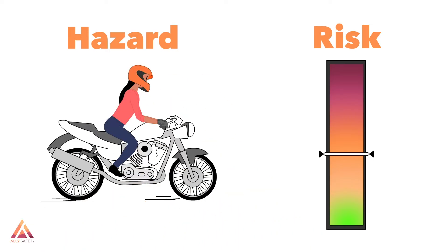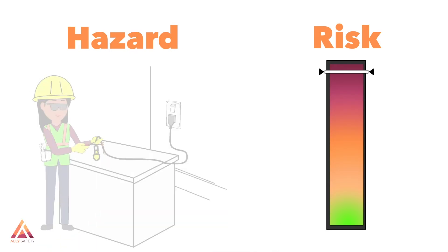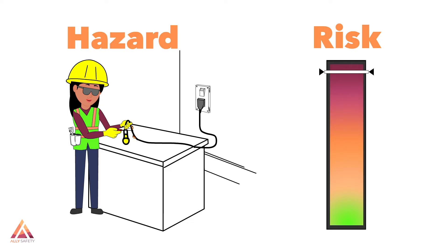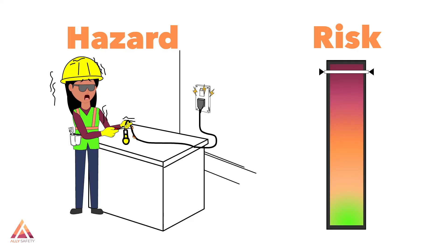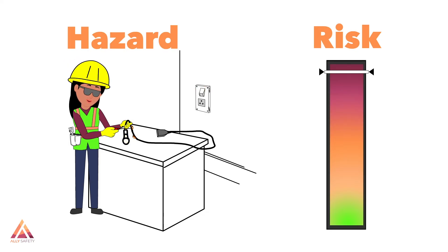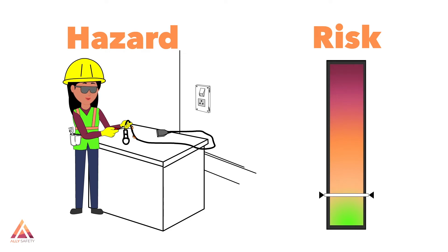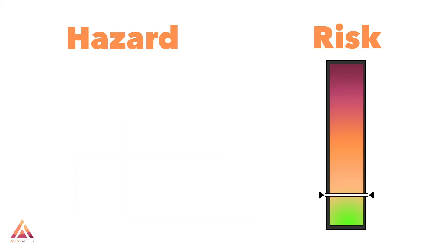Driving a motorcycle is hazardous because there's always the potential to crash and get injured, but the risk is significantly increased if you don't wear a helmet, because the chance of severe injury is greater. Working with electricity can be hazardous if the wiring is live — there's a high level of risk. But if the wiring isn't energized, the work can be done safely.